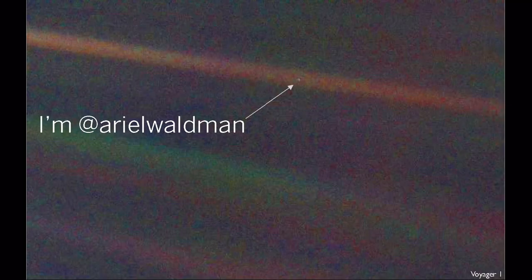I'm Ariel Waldman and I'm here to talk about hacking space exploration. This is one of my favorite images to show when I give talks. It's an image taken by Voyager 1, one of my favorite spacecrafts, going to the outer reaches of our solar system and beyond. That tiny little pale blue speck of a pixel is Earth as seen from about four billion miles away. Images like these really encapsulate how space exploration often changes how we view ourselves and our place in the universe.